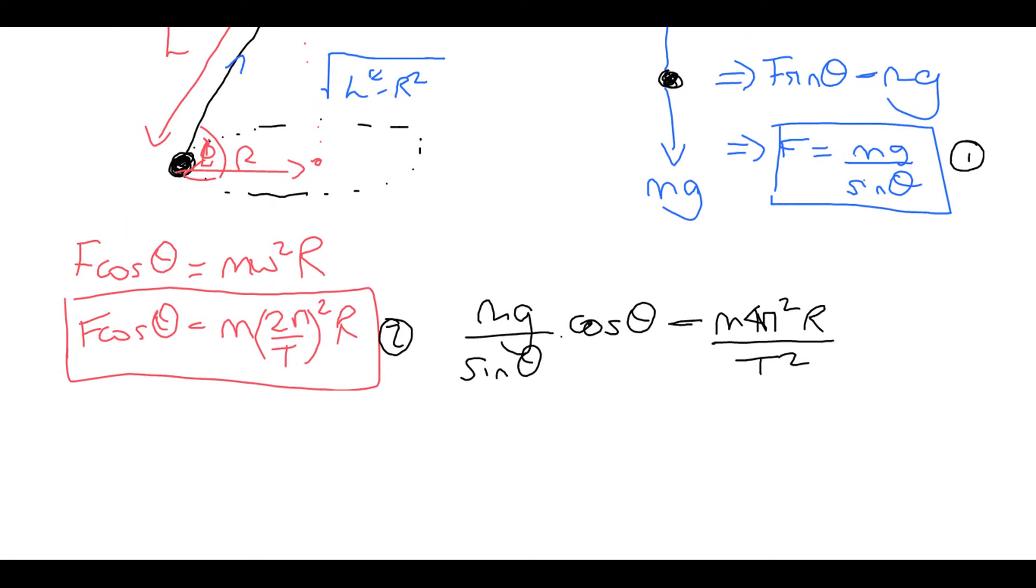So moving on from this. So first of all, let's simplify our expression. So we know that mg over tan theta is going to be m 4 pi squared r over t squared.